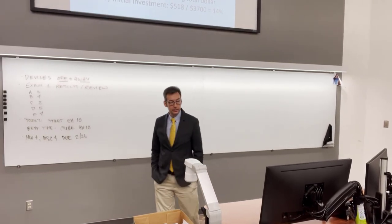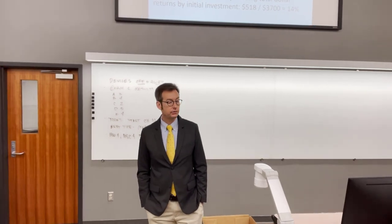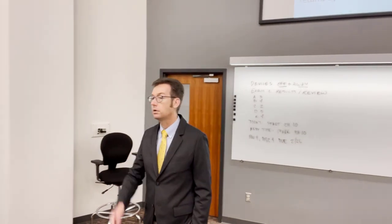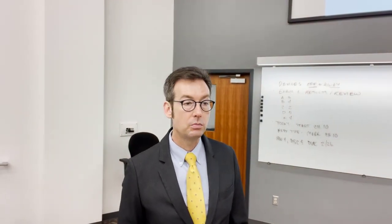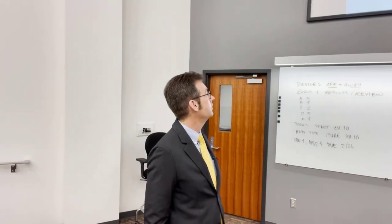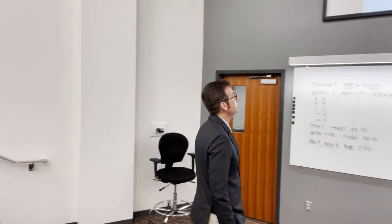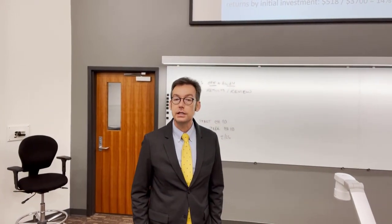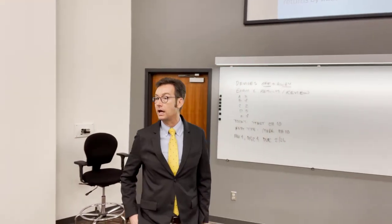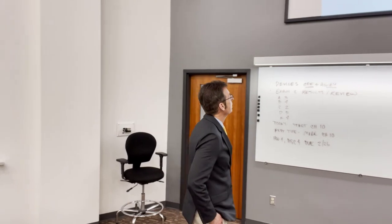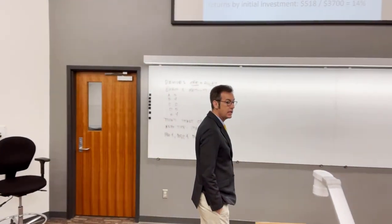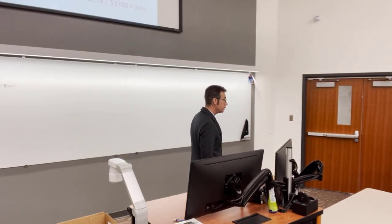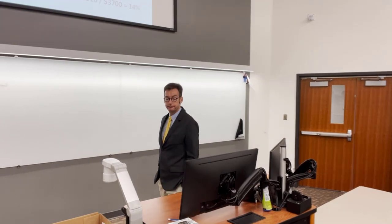Let's calculate our percentage returns from the example. Dividend yield: $1.85 divided by $37 equals 5%. Capital gains yield: $40.33 minus $37, divided by $37, equals 9%. Adding those together gives us a total percentage return of 14%.